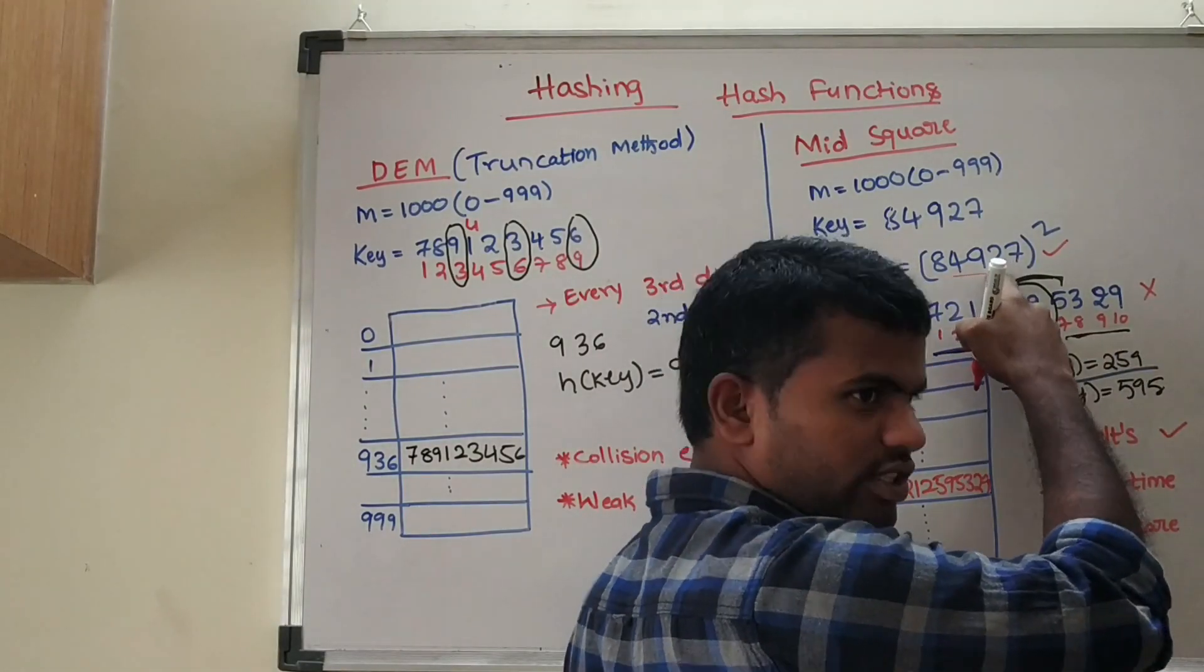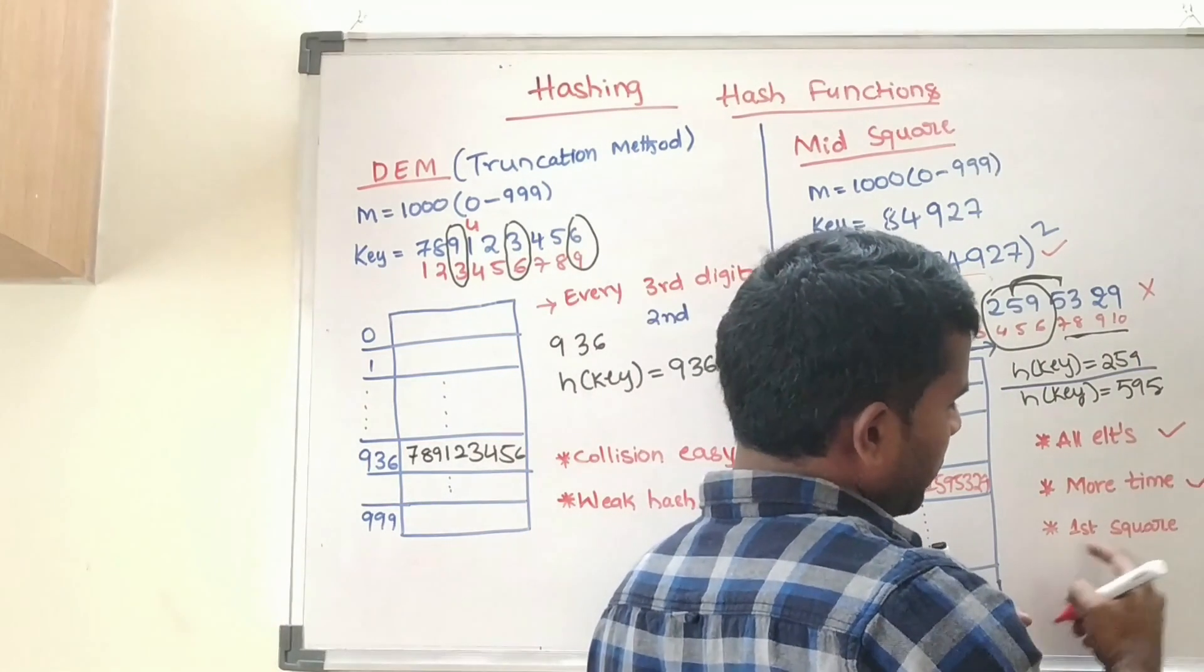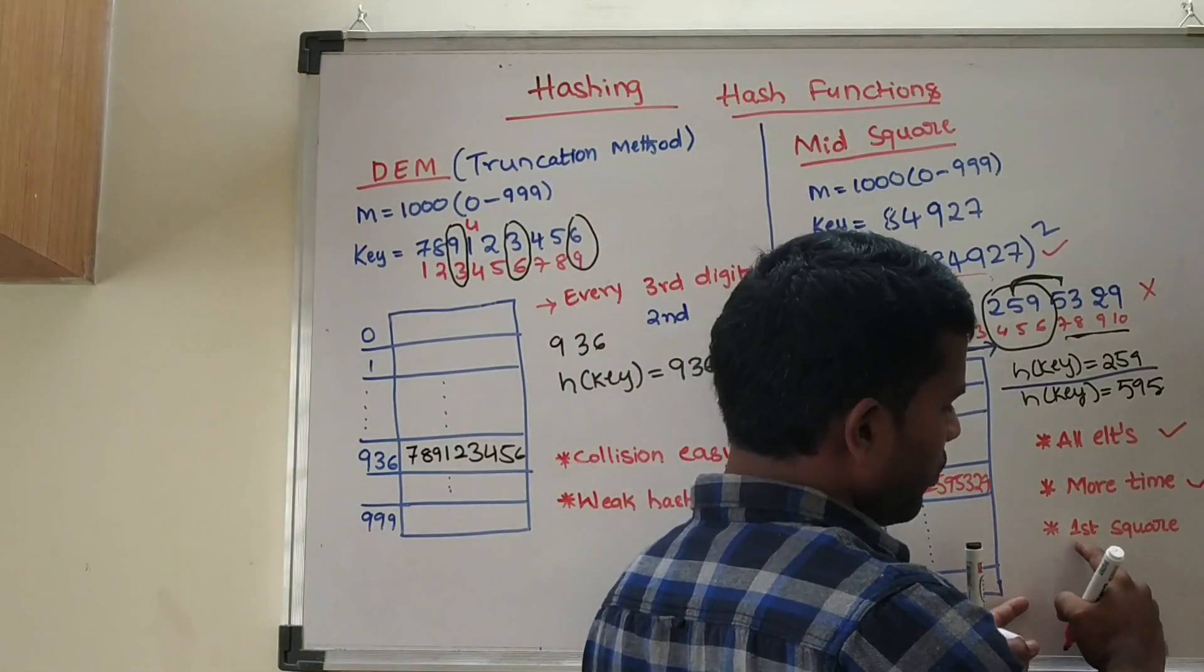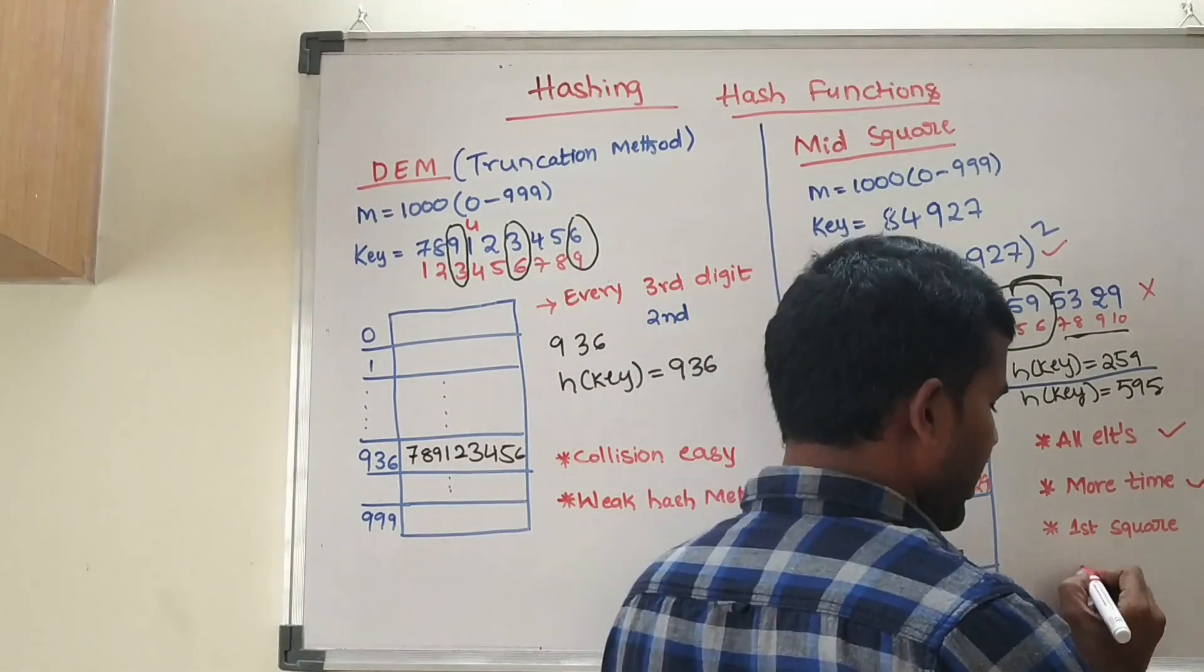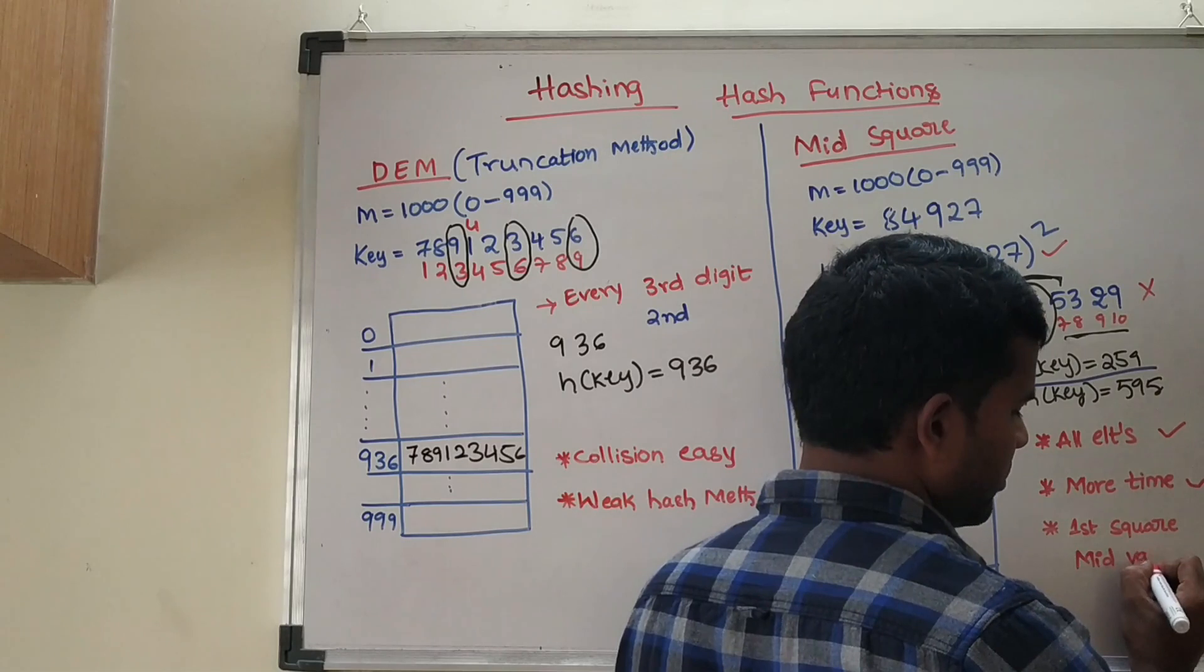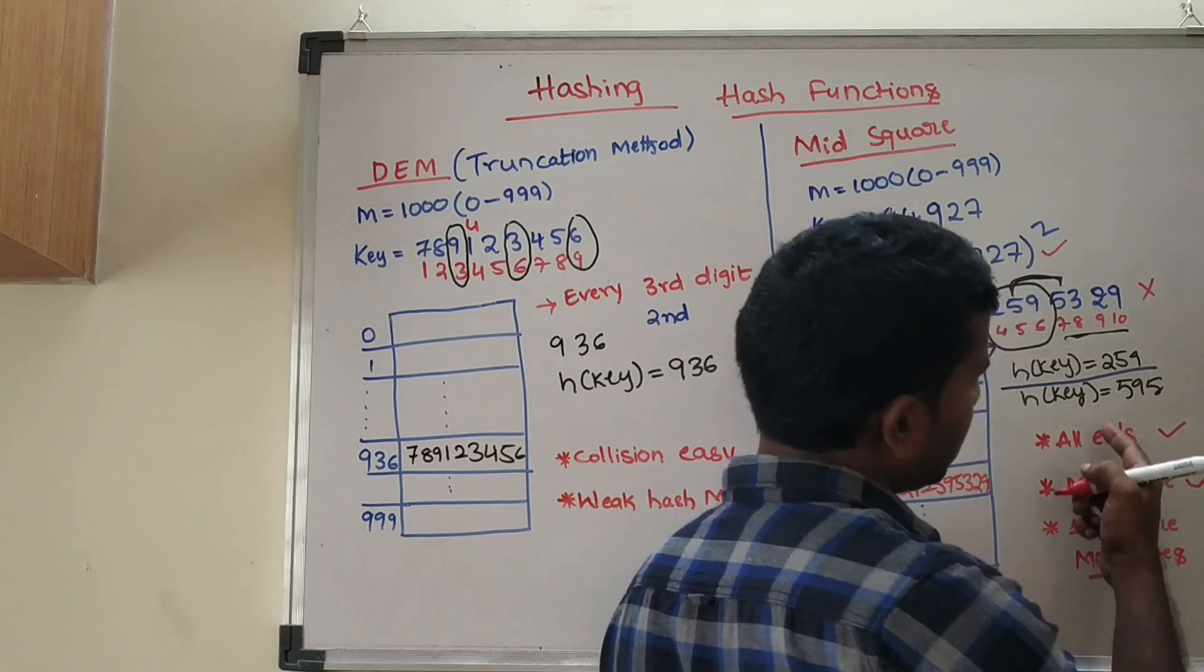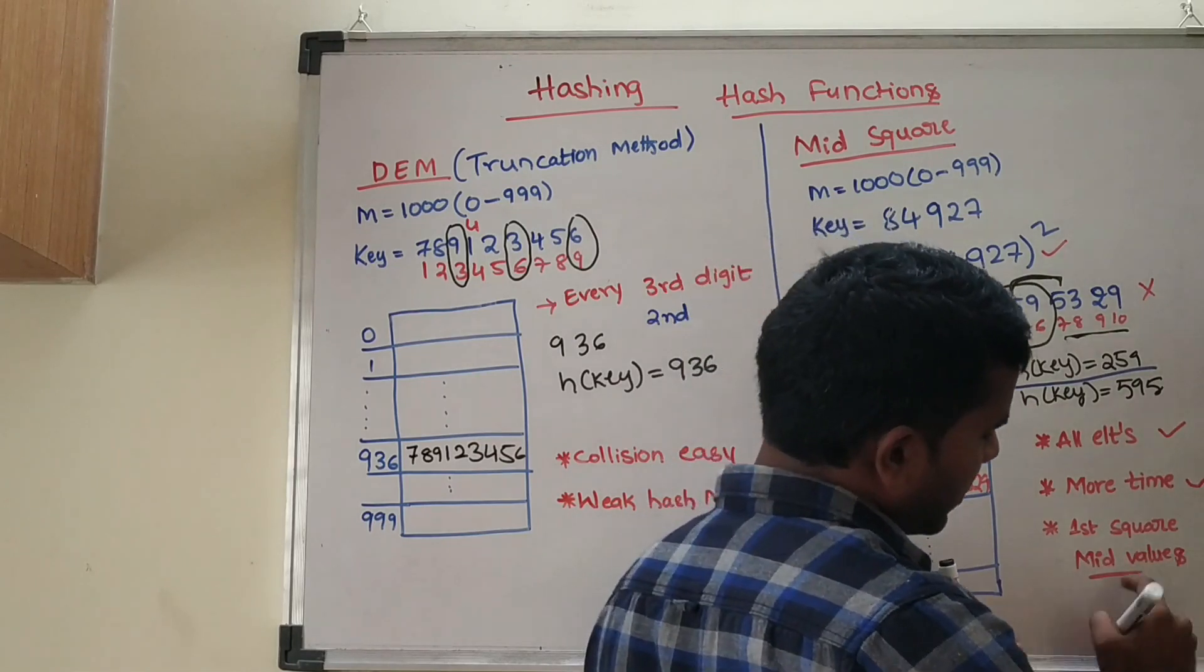First, as I mentioned, you have to first square it, then take the middle values, and in that slot indicated by the middle values, insert the key in that particular slot.